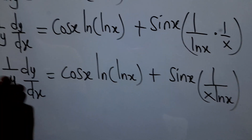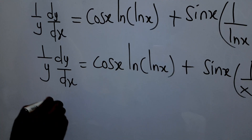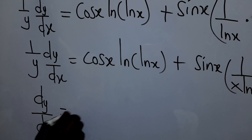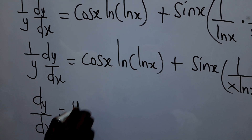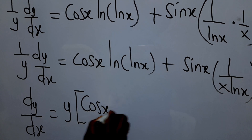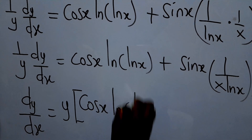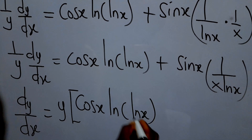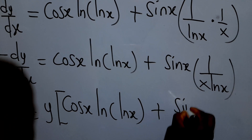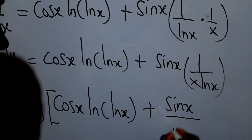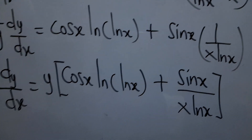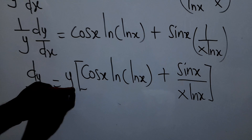We can multiply both sides by y to isolate dy/dx, giving dy/dx equals y times the bracket: cos(x) · ln(ln(x)) plus sin(x) over (x · ln(x)).